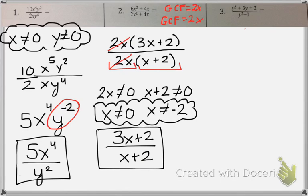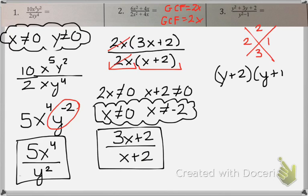Let's look at number 3. You can see that our numerator is a magic x problem. So when I factor it out, I get y plus 2 times y plus 1. Our denominator is a difference of two squares problem. So I get y plus 1 times y minus 1.